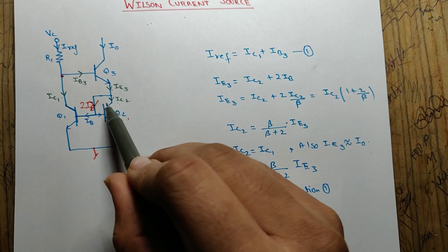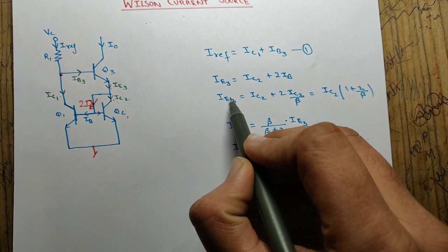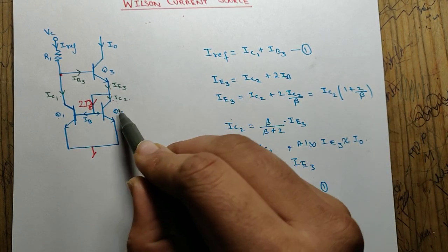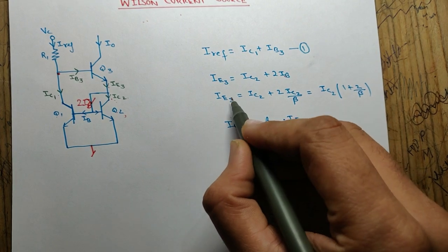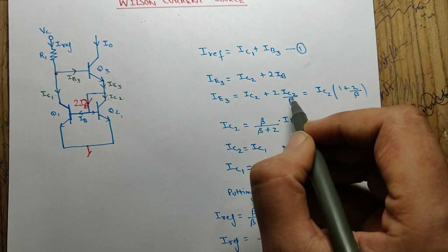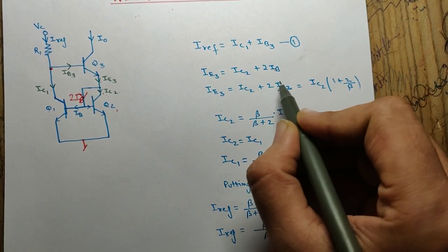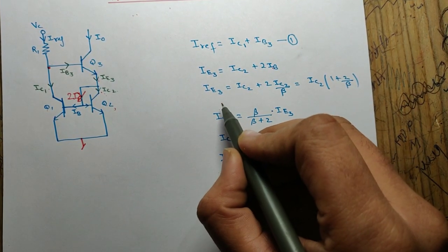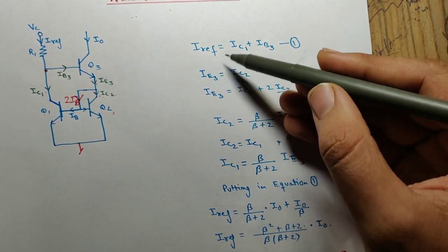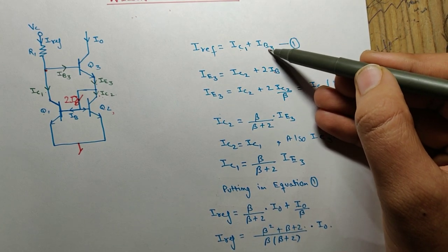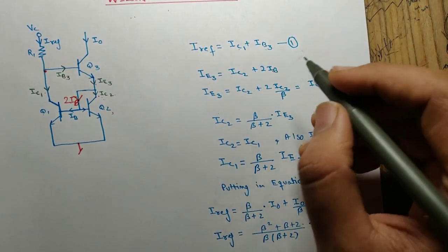ie3 will be equal to ic2 plus 2ib. ib can be replaced by ic2 by beta. So ie3 will become ic2 plus 2ic2 by beta, which can be written as ic2(1 plus 2 by beta). Now if we rearrange this equation, we get ic2 in terms of ie3. The main goal of the analysis is to put ic1 and ib3 in terms of i0. That's the main goal, so I am trying to do that.